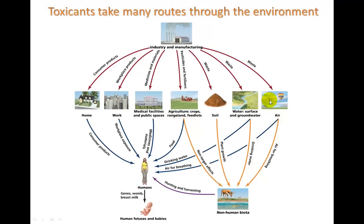Keep in mind that toxicants start here in the factory as a new chemical, and these chemicals can be used for consumer products, workplace products, medicines and materials, pesticides and fertilizers. Through manufacturing there's waste, which can go into the ground, groundwater, surface water, and into the air, ultimately finding their way into the environment and into all living beings — including us — through consumer products, workplace exposure, medicines, food, drinking water, the air we breathe, and if it goes into us, it's also going to go into our babies.